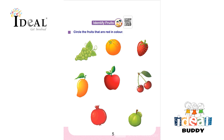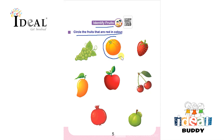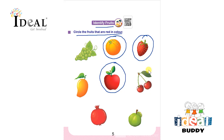Hello everyone. In this page the child has to identify fruits and circle the fruits that are red in color. The first one is tomato — tomato is red, so the child will circle it. Next is strawberry — the child has to encircle strawberry. Next is an apple — apple is also red, so the child has to encircle it.